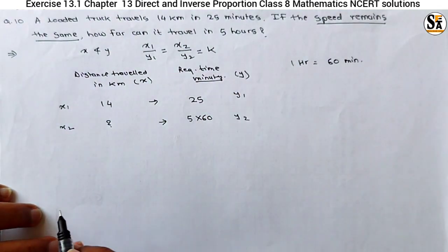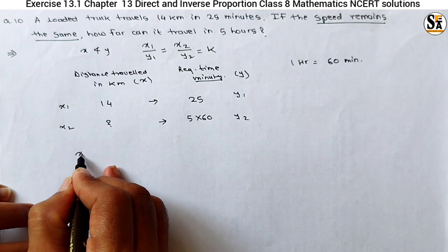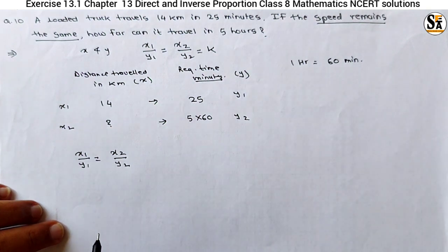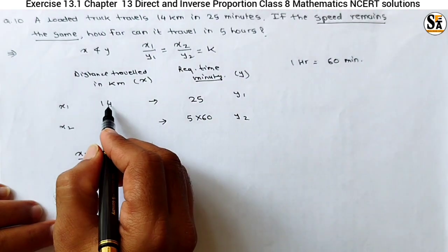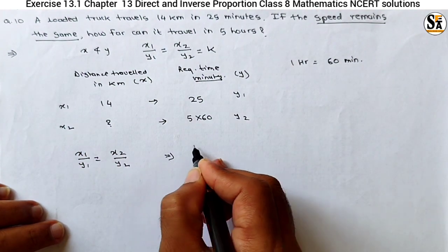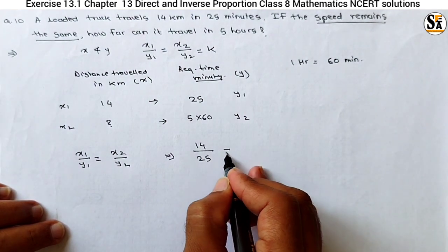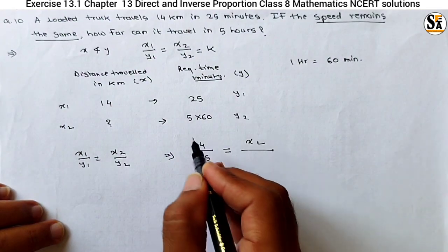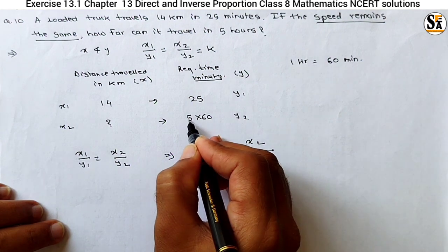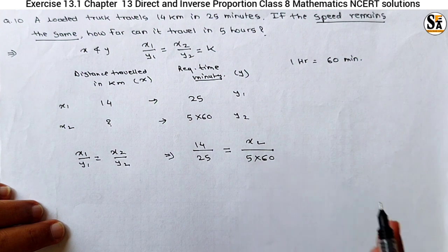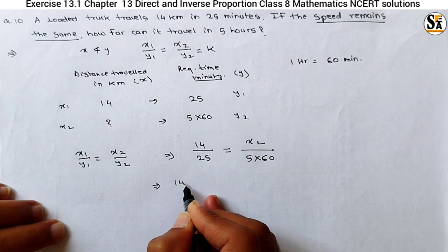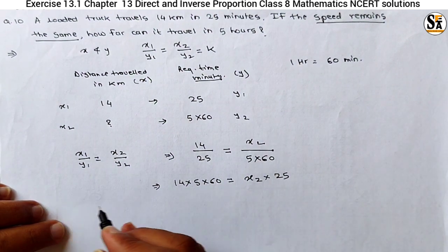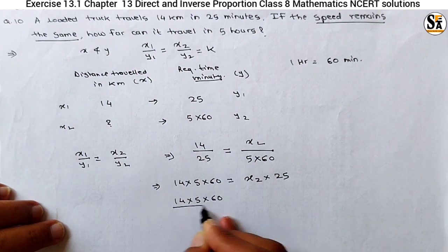For direct proportion, x1 upon y1 equals x2 upon y2, because the ratio remains the same for different values of x to corresponding values of y. Putting x1 as 14, y1 as 25, and y2 as 5 into 60: taking cross multiplication, 14 into 5 into 60 equals x2 into 25. Transferring 25: x2 equals 14 into 5 into 60 divided by 25. It's easier to simplify before multiplying — 5 divides 25 giving 5, and 5 divides 60 giving 12.